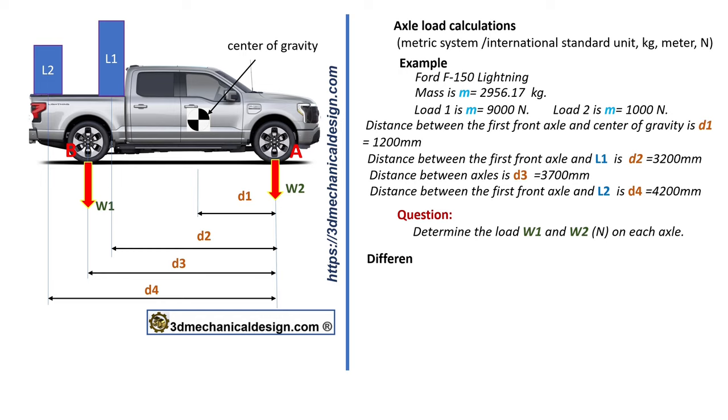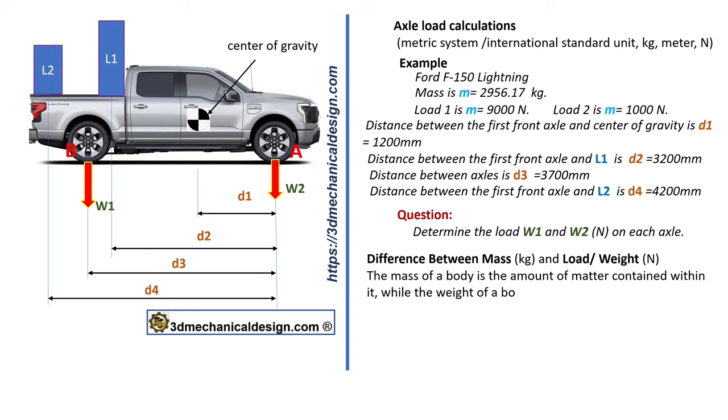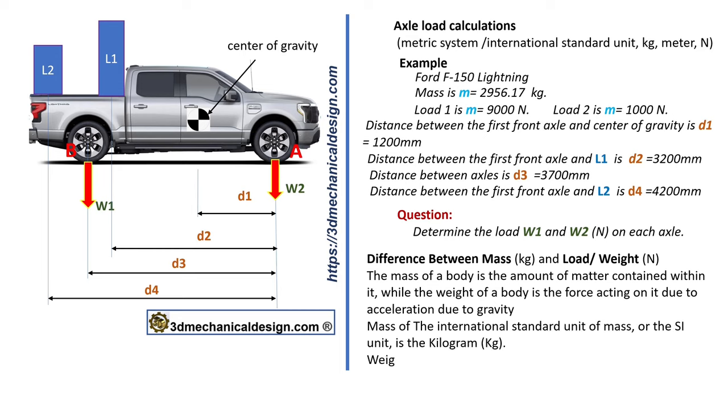Difference between mass (kilogram) and load/weight (newton): The mass of a body is the amount of matter contained within it, while the weight of a body is the force acting on it due to acceleration due to gravity. The SI unit of mass is the kilogram. Weight is a measure of force; the SI unit of weight is newton.